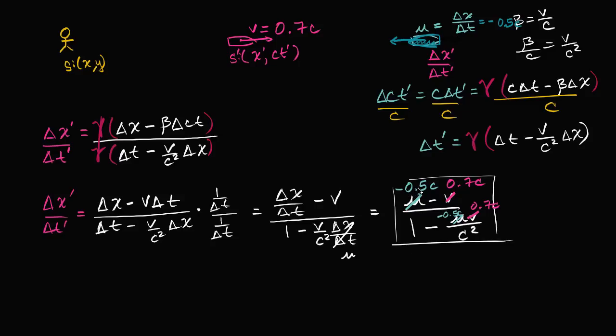Well, the numerator, negative 0.5c minus 0.7c, that's going to be negative, our numerator right over here, is going to be negative 1.2c.